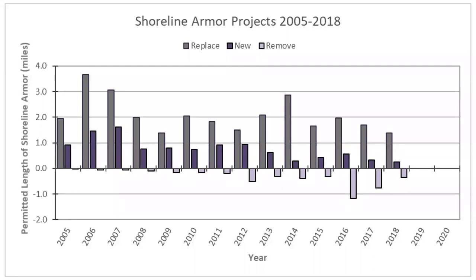As part of the Puget Sound Partnership's vital sign on shoreline armoring, WDFW has been analyzing its permitting data to look at regional armoring trends. Using the Hydraulic Project Approval or HPA data, we can look at permitted armor over the past decade and a half. This graph shows the permitted length of shoreline armor on Puget Sound in miles, including new armor, replacement armor, and armor removal. We've seen a gradual decline in new installations of permitted armor shown in dark purple, and a gradual increase in armor removals shown in light purple. The highest category has consistently been replacements, shown in gray.